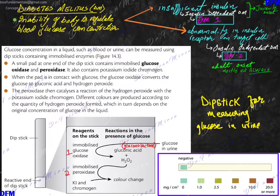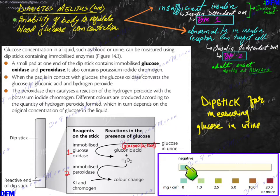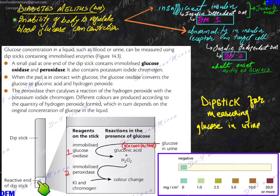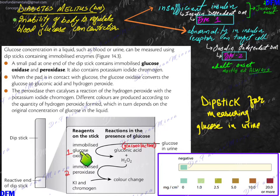Initially, dipsticks were used to measure glucose quantity in urine. A dipstick is a strip of paper with a reactive end, onto which chemicals — specifically enzymes — are adhered. The reactive end contains four different chemicals: two immobilized enzymes, glucose oxidase and peroxidase, along with potassium iodide and chromogen, all impregnated onto the strip.